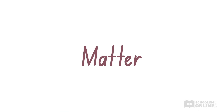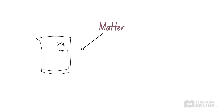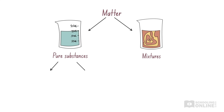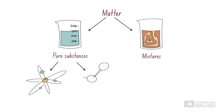In chemistry, we look at the properties of different types of matter. In this video, we will explore the two main types of matter: pure substances and mixtures. Pure substances can be broken down further into elements and compounds, while mixtures may be classified as homogeneous or heterogeneous.